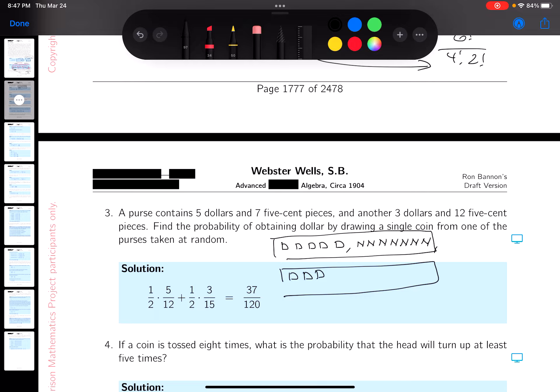So the other purse is $3 and 12. I don't know if I want to write that down. One, two, three, four, five, six, seven, eight, nine, 10, 11, 12. I'm not going to count those again. Even writing them down is kind of ridiculous. So what are you doing?